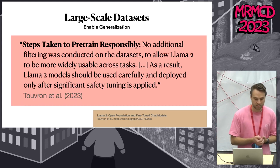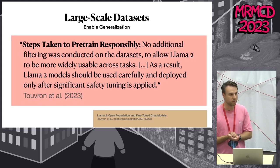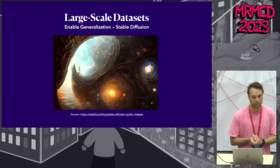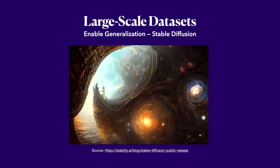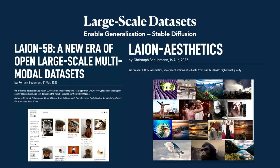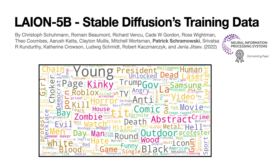Meta states that as a result, these models should undergo significant safety tuning before deployment. But safety tuning can be costly, and maybe the Lensa app developers were not aware of this. They used Stable Diffusion, which is trained on LAION-5B, a large-scale publicly available dataset. In the LAION-5B research paper, potential risks are already reported — I personally created annotations indicating what inappropriate content is contained in the dataset.